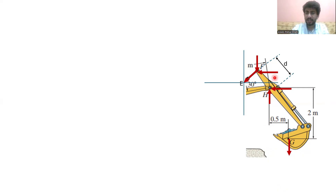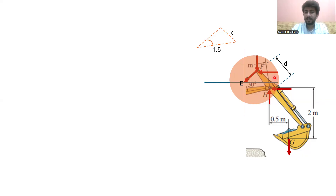I can draw a coordinate at point E and I can draw a triangle. You see that the distance between points E and F is about 1.5 meters, and D is basically the distance between the points H and F. We have to find this distance. I can apply sine theta because it is equal to perpendicular over hypotenuse. Dx is the perpendicular and 1.5 is the hypotenuse, so we get that distance which is about 0.75 meters.